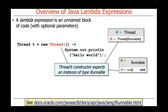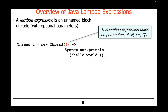This thread's constructor expects an instance of type Runnable. Runnable is a very simple functional interface in Java that defines a single run method that takes no parameters and returns no results. The syntax for Lambda Expressions is fairly straightforward. This particular use — an open-close paren — indicates that this Lambda Expression takes no parameters at all.